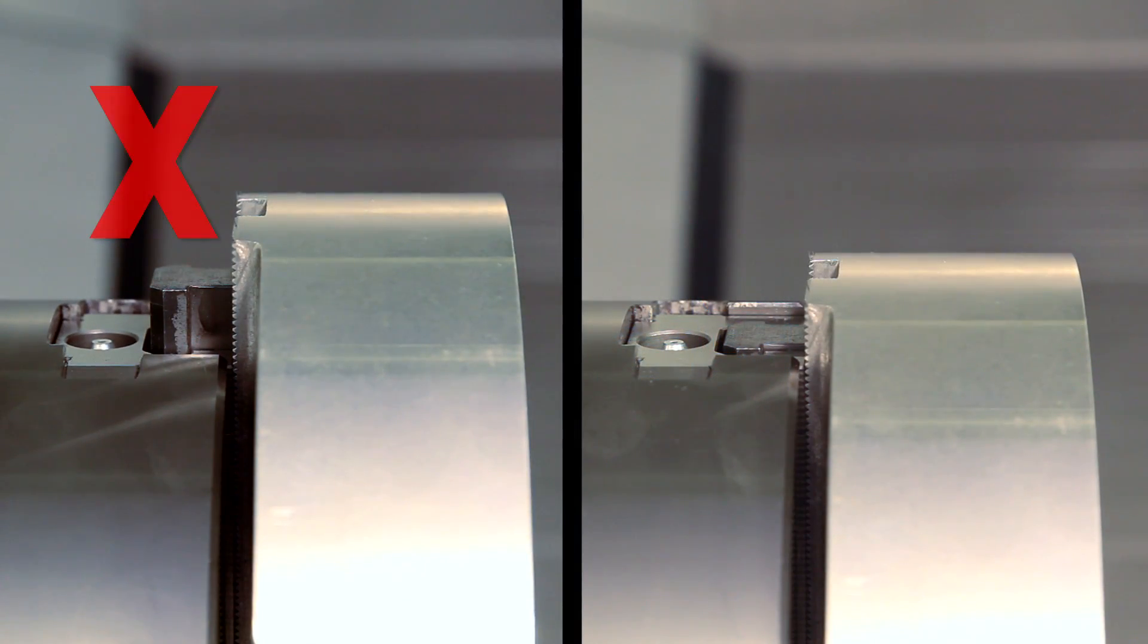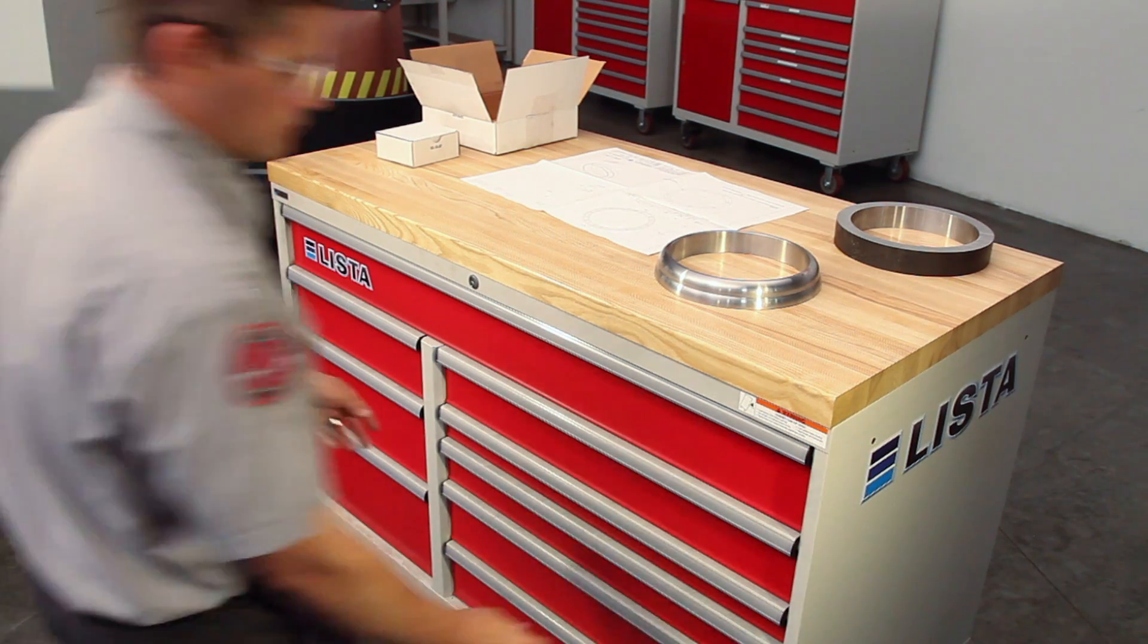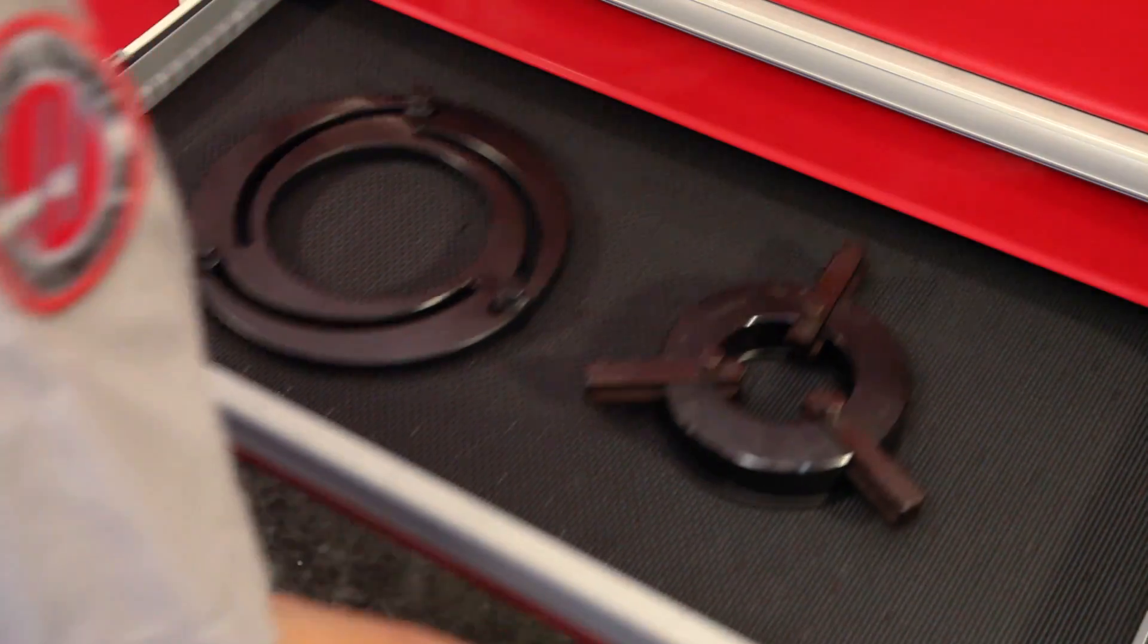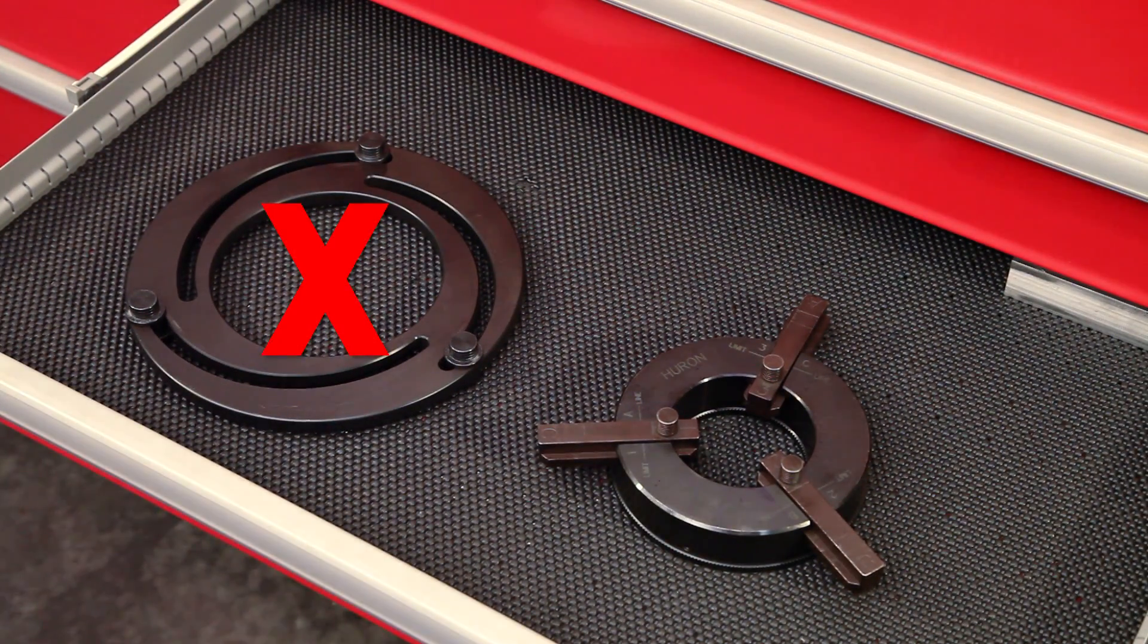Remember, with our jaws in position for cutting, the T-nuts must be inside the chuck body. Since we'll be using these pie jaws to hold a large ID part, we can't use this style of boring ring since it will block the cutting path.